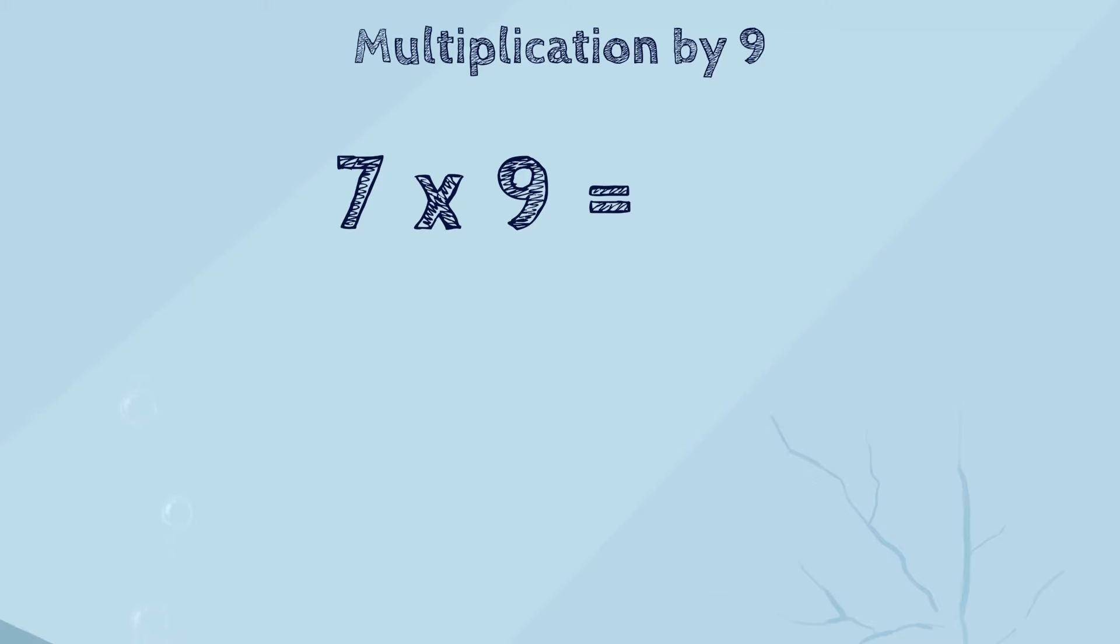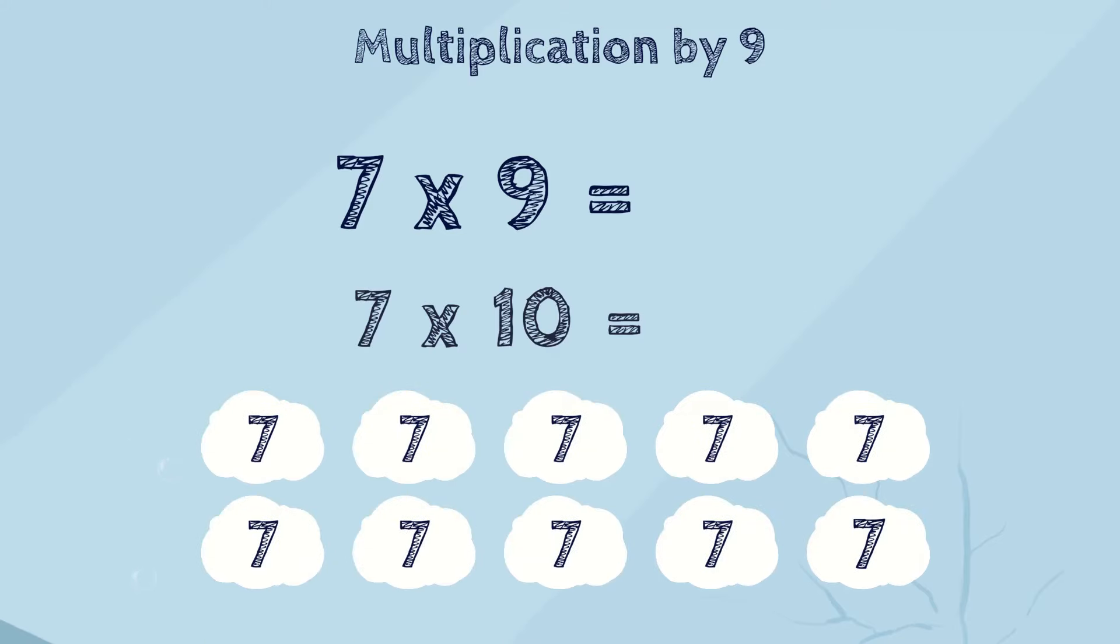We know how to easily add 7 ten times. That'll be 7 times 10. So, we know the answer when adding 10 sevens. But, we need only 9 in this problem. What can we do? May we subtract 1 seven?